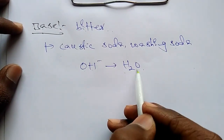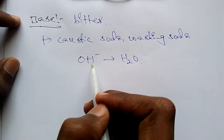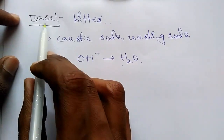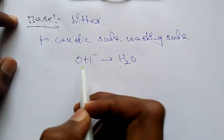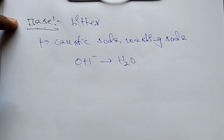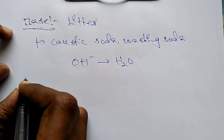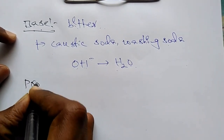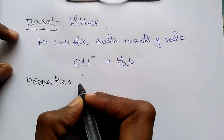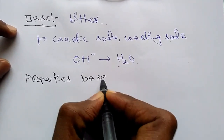As per Arrhenius, a base is the substance that liberates OH- ions in aqueous solution. Bases and acids fall into many categories. We will now choose the properties of bases, which are similar in number to the properties of acids.